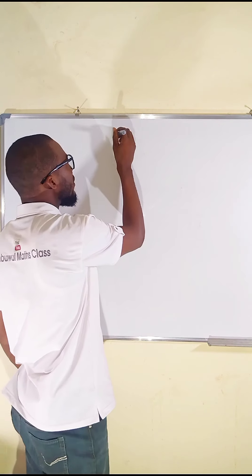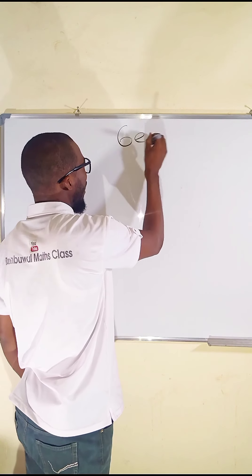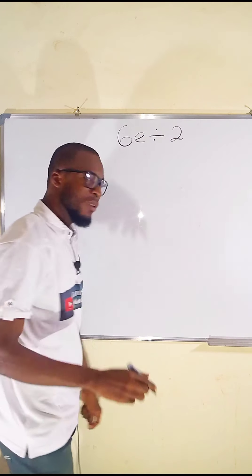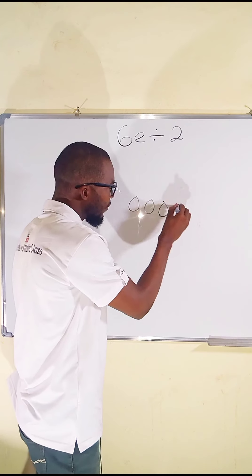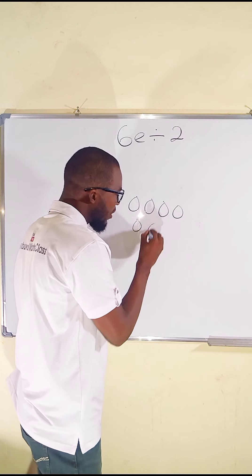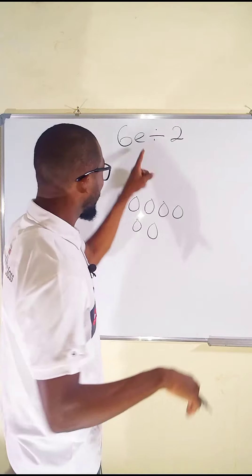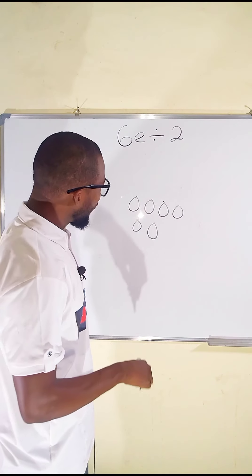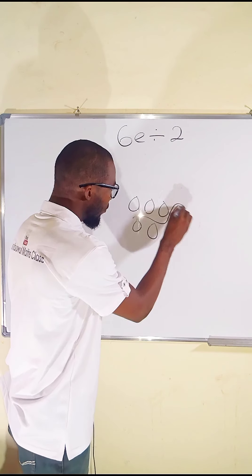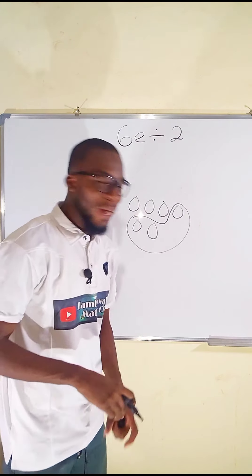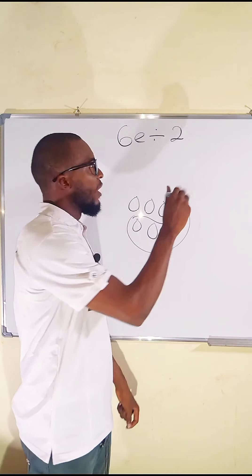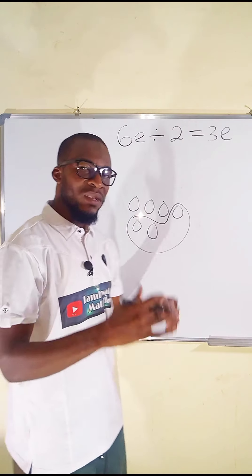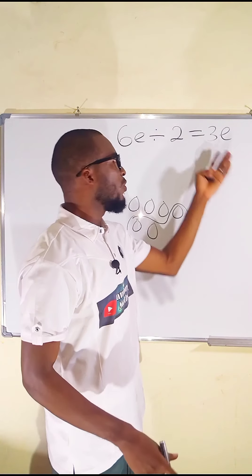Let's move on to division, the last operation. Suppose we have 6x divided by 2 — we relate x with eggs, so we have six eggs. Dividing into two equal parts, you can see we get three and three. You divide 6x into two equal parts and you have 3x.